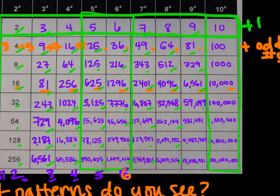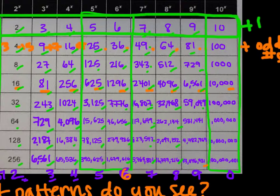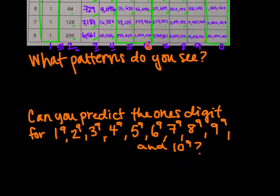For base 7, the cycle 7, 9, 3, 1 repeats, so 7 to the 9th ends in 7. For base 8, the cycle 8, 4, 2, 6 repeats, so 8 to the 9th ends in 8. For base 9, alternating 9 and 1, the 9th power ends in 9. For base 10, it ends with 0. We can verify: 3 to the 9th is something like 19,000-something, and I bet it ends with a 3 — so we can predict those patterns.